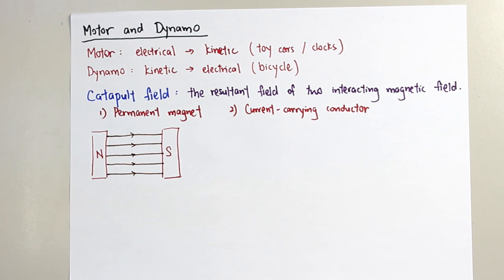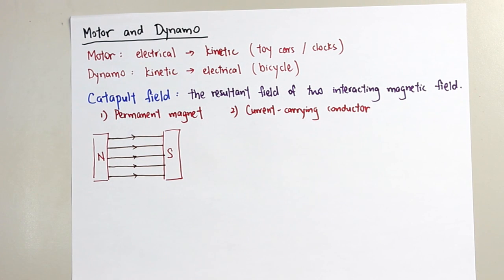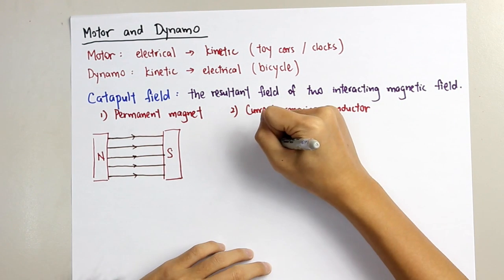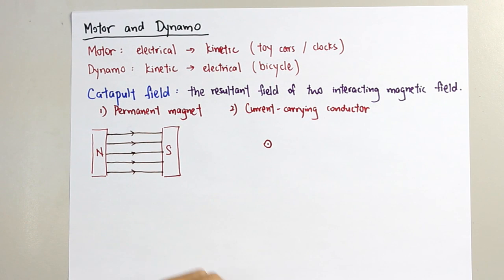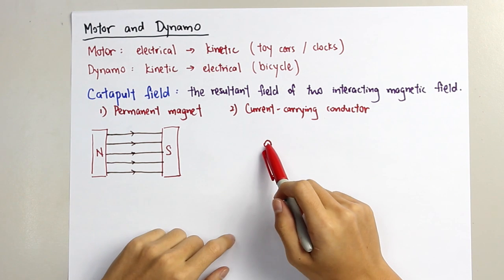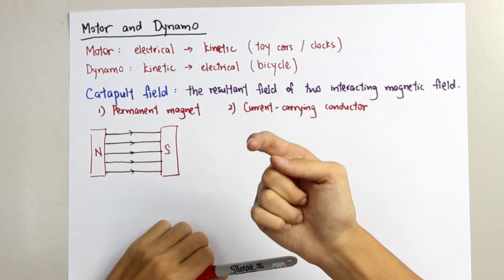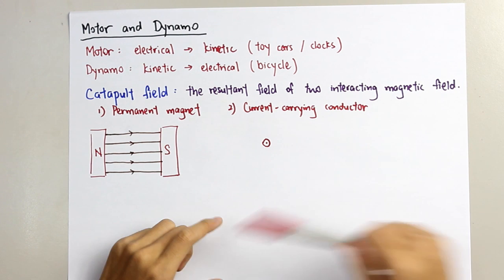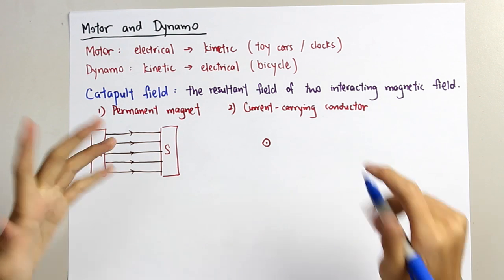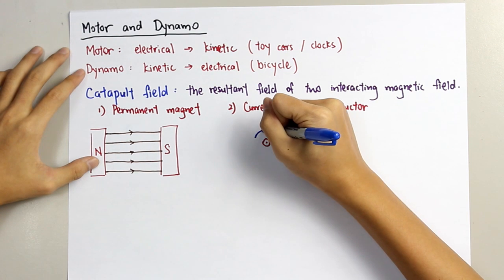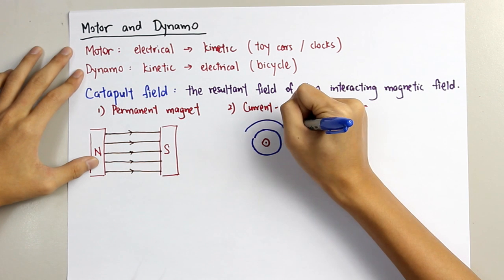The next one is the magnetic field due to a current-carrying conductor. This represents a wire. When there is a dot inside the wire, it indicates the current is moving out from the paper. The magnetic field will be a round shape around the wire.